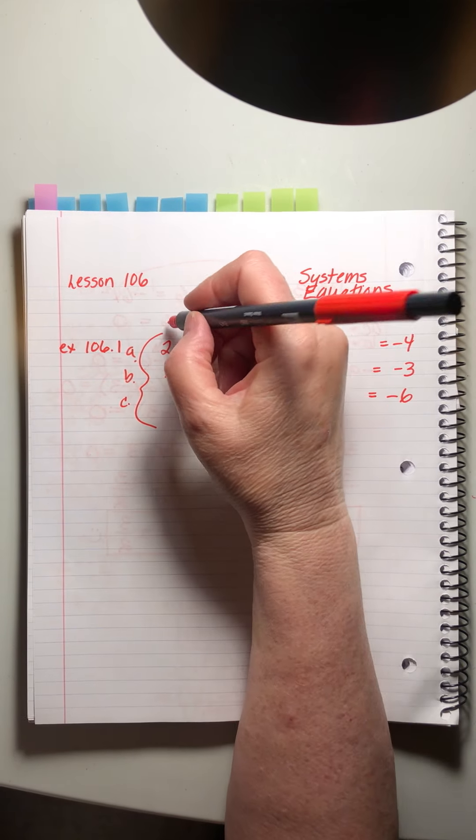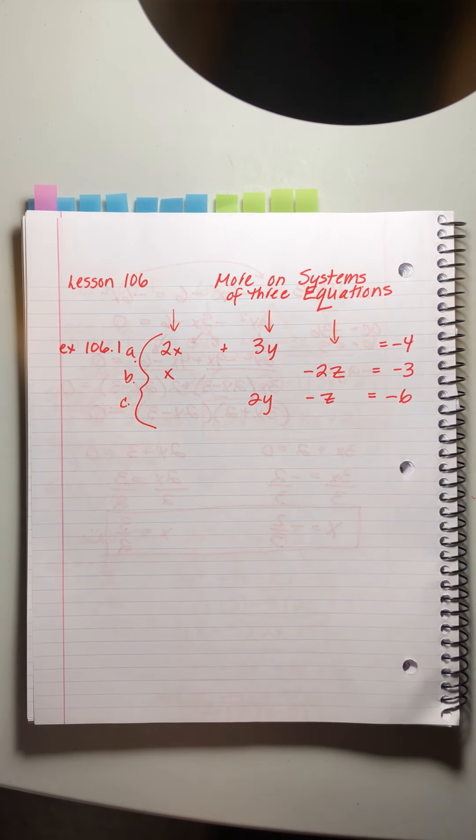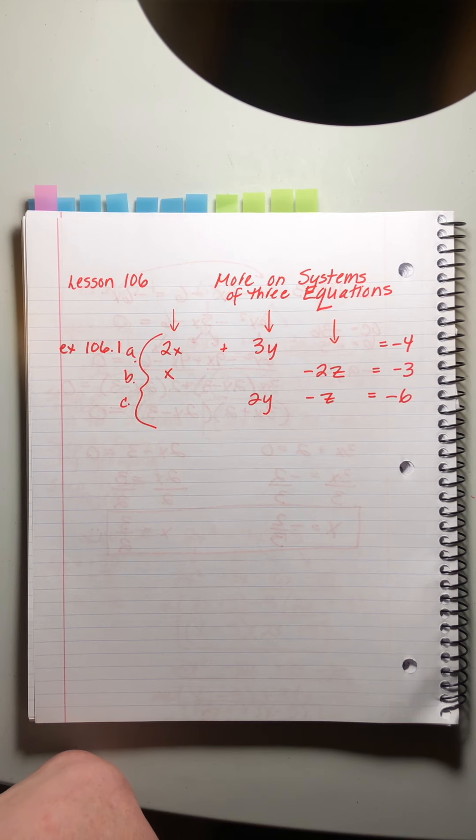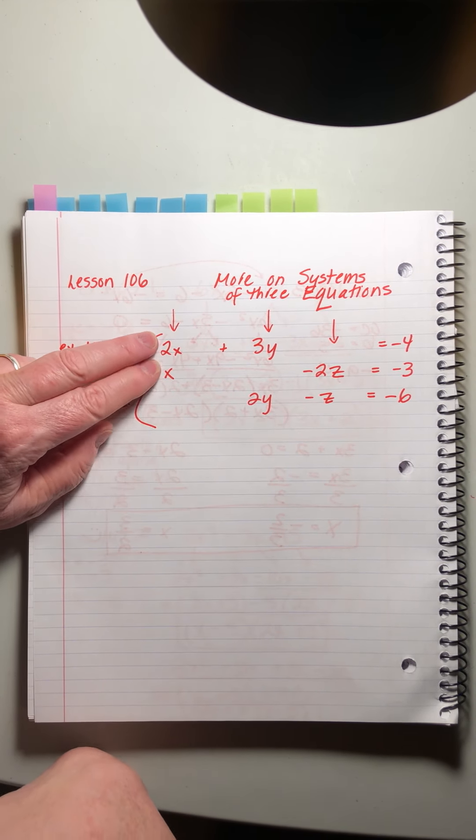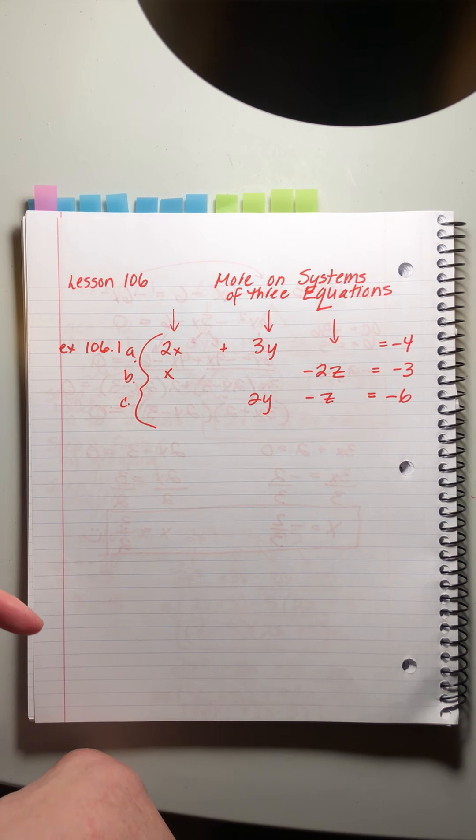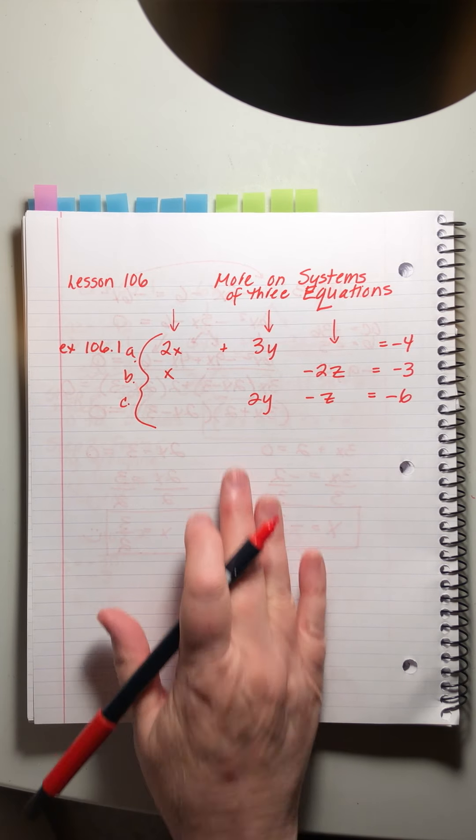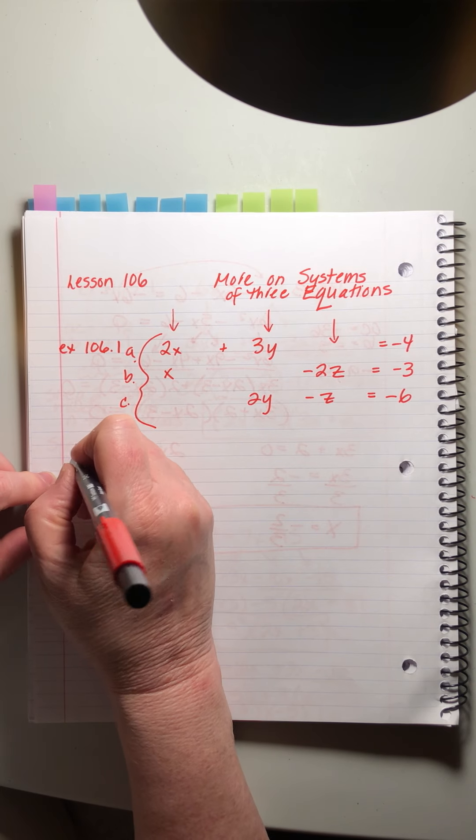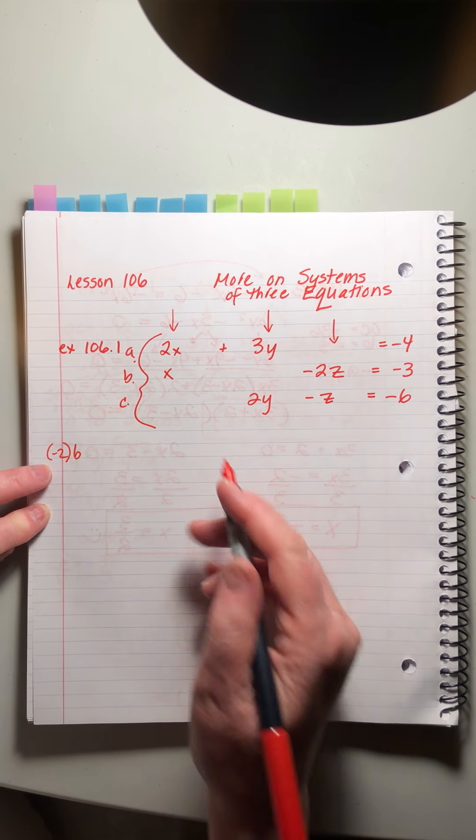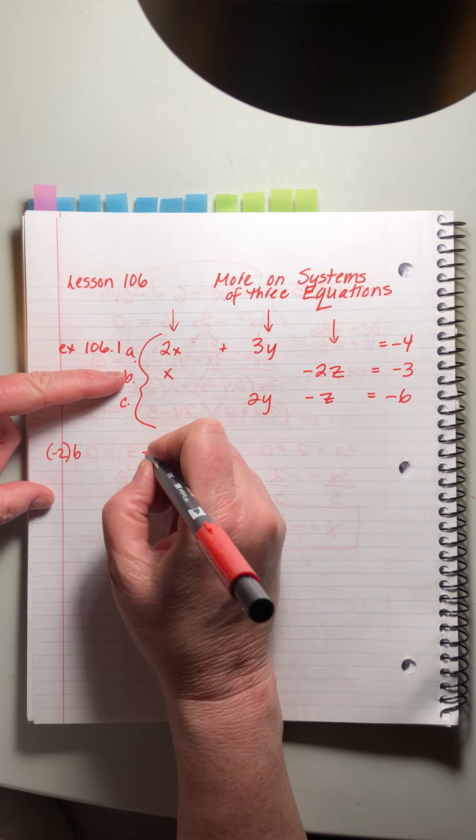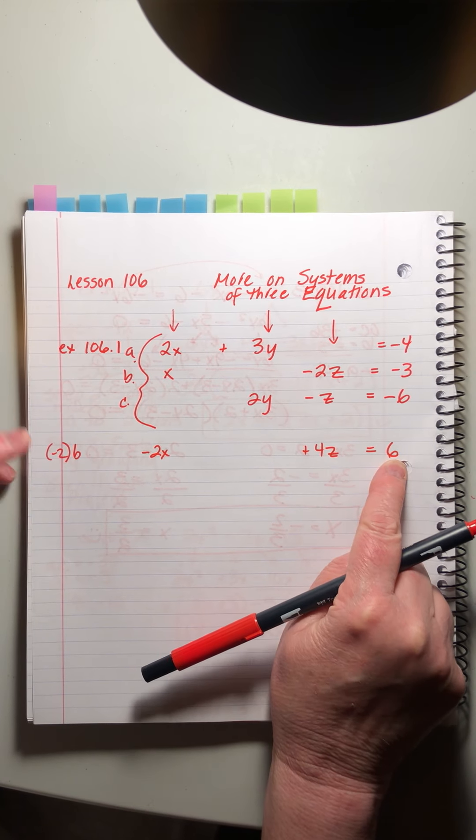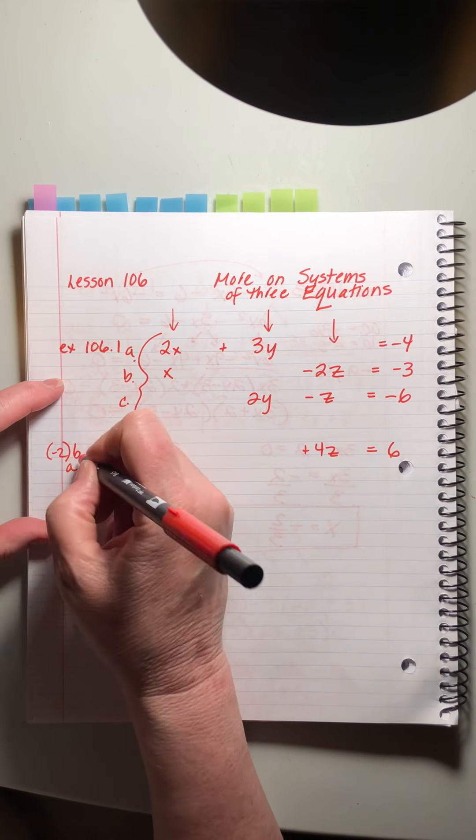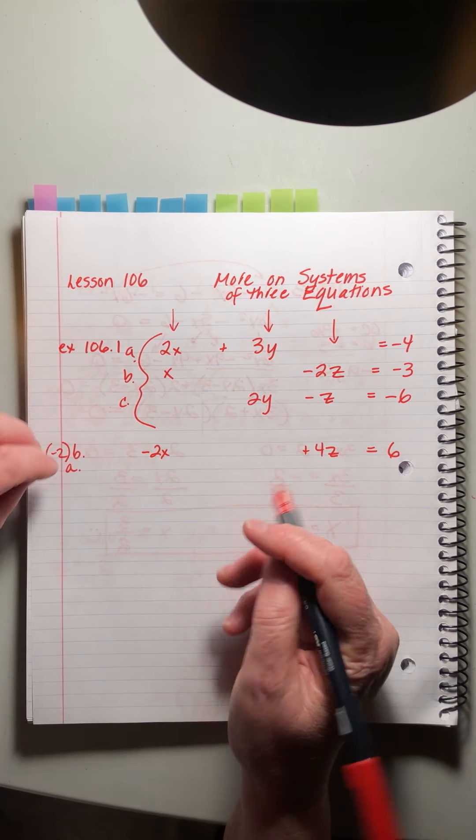Now just like we did before we look down the columns and decide which pair we would like to eliminate first. And normally we look for a positive and a negative so that they'll already offset each other. We're looking for that positive negative combo but we don't have it in this problem. I'm just going to start with the x's and I'm going to multiply b times minus 2. If I multiply b times minus 2 I get minus 2x plus 4z equals positive 6. Change the sign. Change the sign. Beautiful. We're going to add that with a.